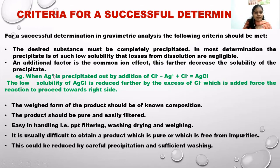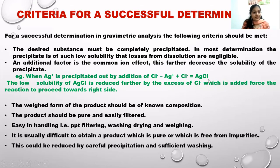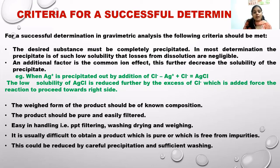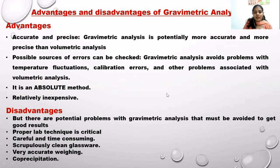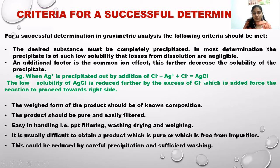For example, if we want to precipitate silver ions, we add chloride ions to get a precipitate of silver chloride and keep the chloride ion in excess. This common ion effect keeps the equilibrium going towards the right-hand side. The low solubility of AgCl is further reduced by the excess chloride ion added. Also, the product should be of known composition — for instance, we must know the composition of silver chloride when converting silver to it.